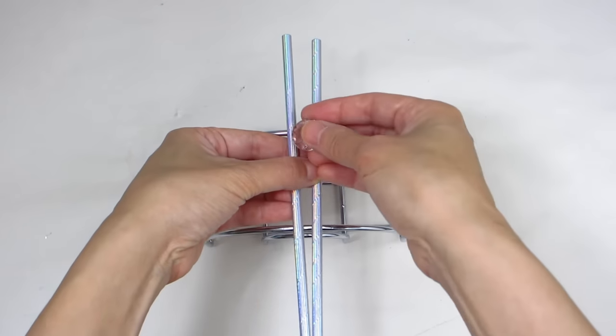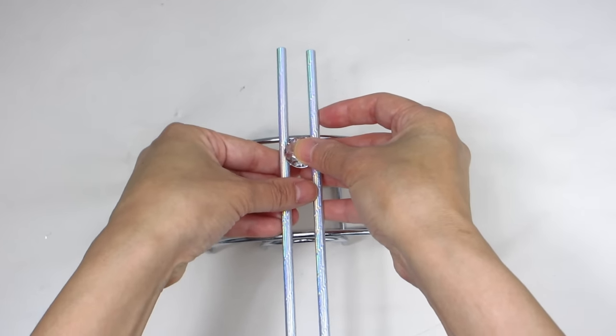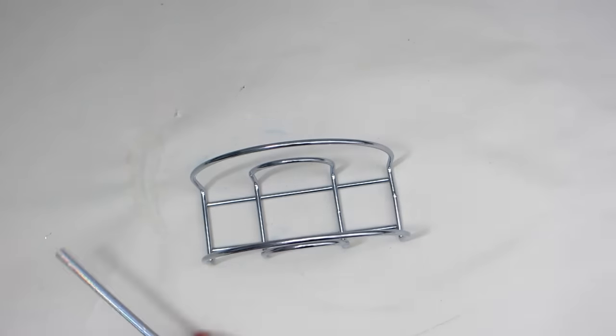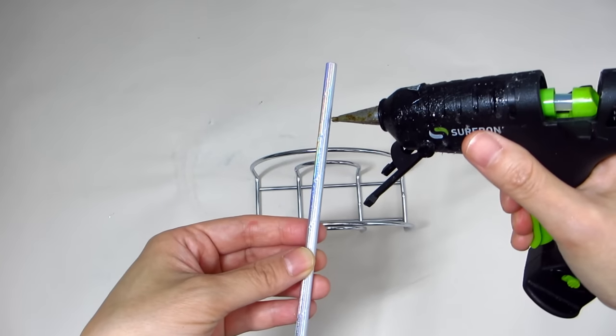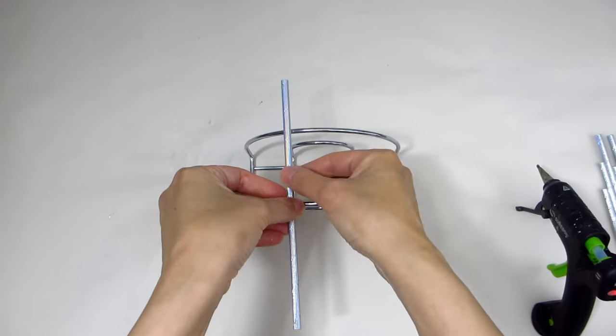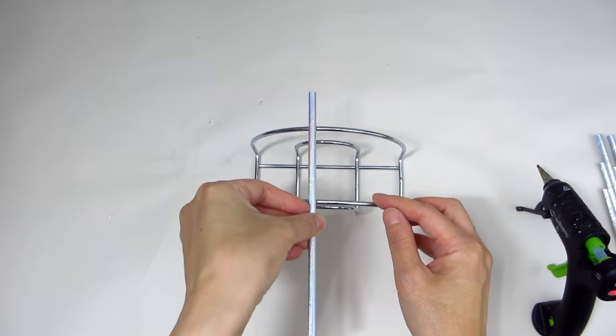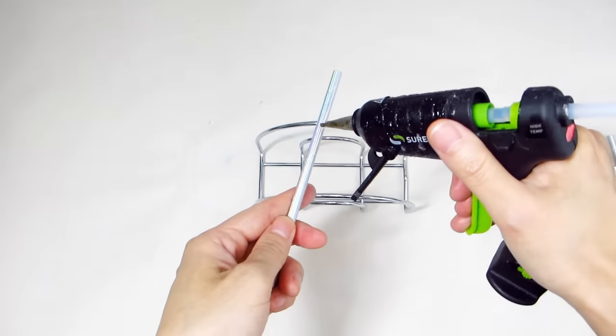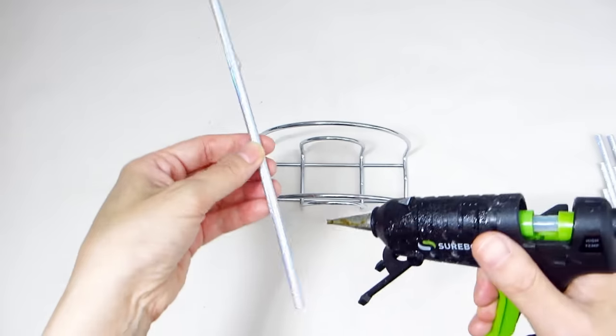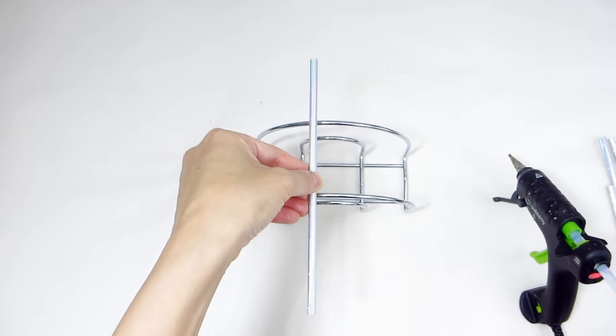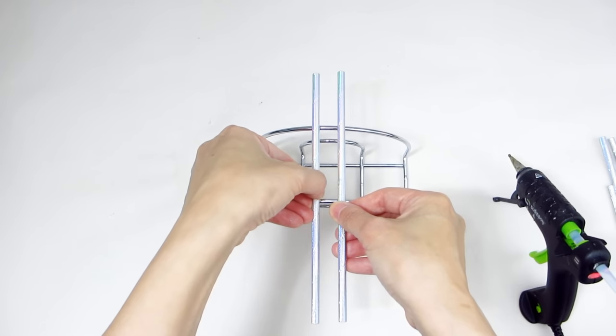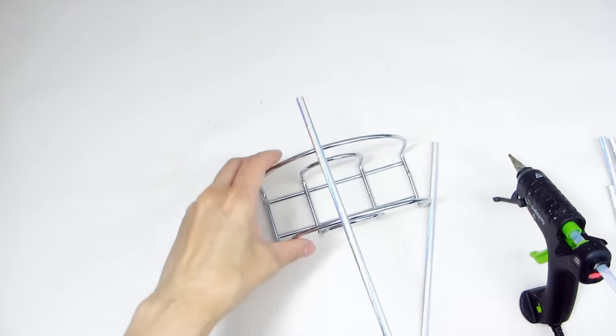The first step is to stand up the napkin holder and place a couple of the straws perpendicular to the napkin holder along the rounded edges of the napkin holder. I'm placing mine about a half inch apart from each other so I can fit the diamond shaped gems in between the straws. Start by gluing two straws parallel to each other onto the napkin holder. A little bit of hot glue should suffice.